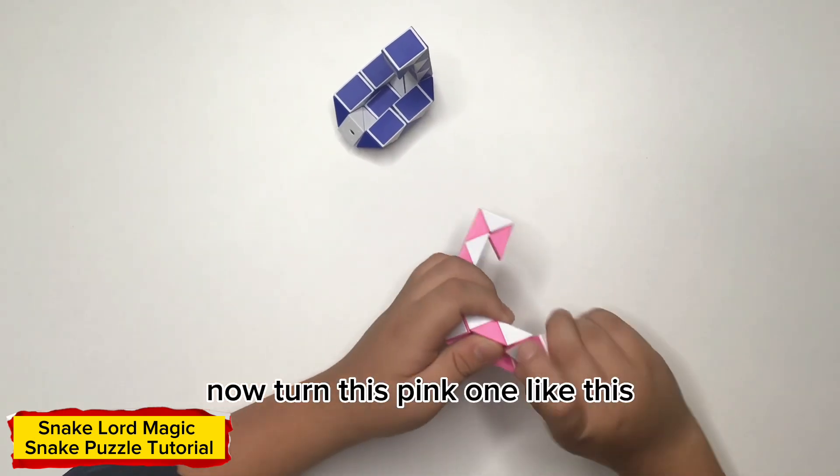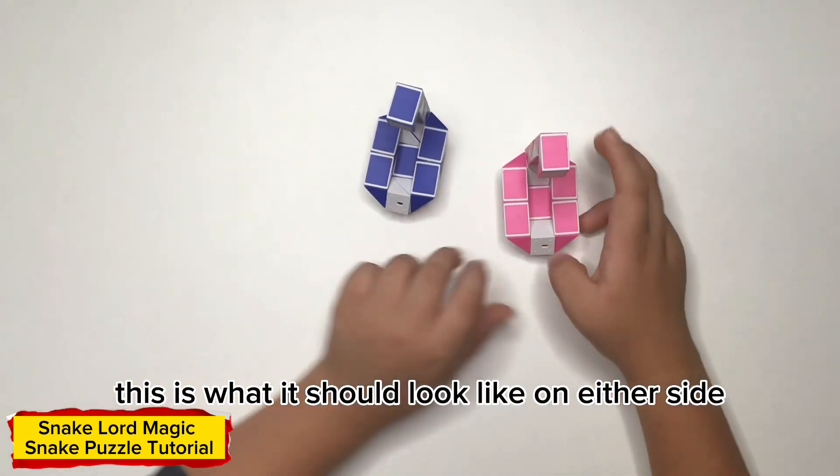Now turn this pink one like this. This is what it should look like on either side.